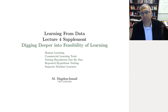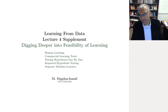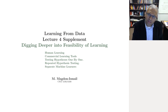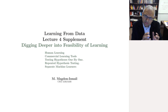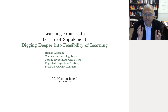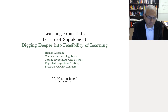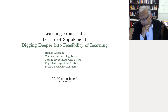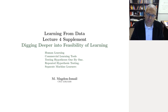Hi there. This is a supplement to lecture 4 where we're going to dig deeper into the feasibility of learning. Lecture 4 on the feasibility of learning reduces learning to a two-step process, asks you to fix a hypothesis set, and introduces the possibility of failure. There are lots of questions and discussion, and it's great — it indicates that you're really thinking about the feasibility of learning. So let's address these questions.